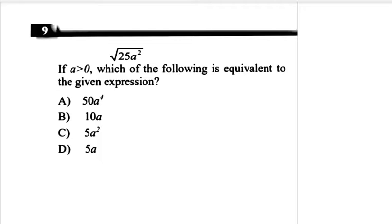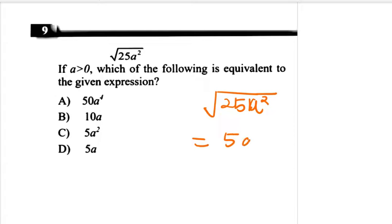Question number 9: if A > 0, which of the following is equivalent to the given expression? It is √(25A²), which is simply 5A. That is the answer. Question number 9 is done.